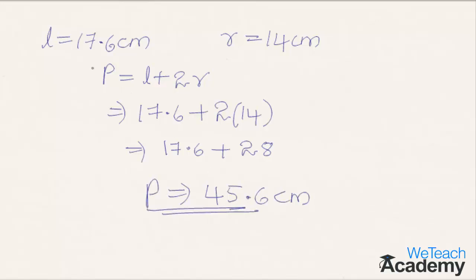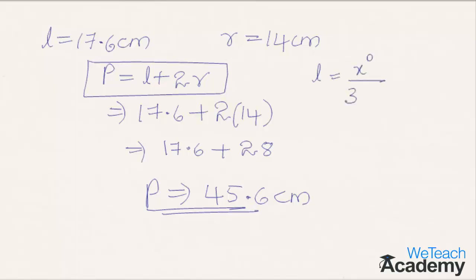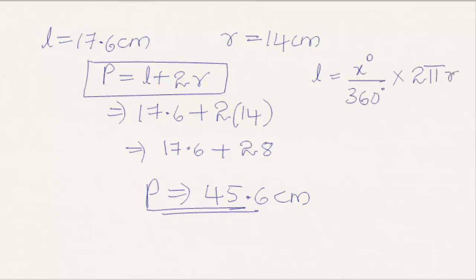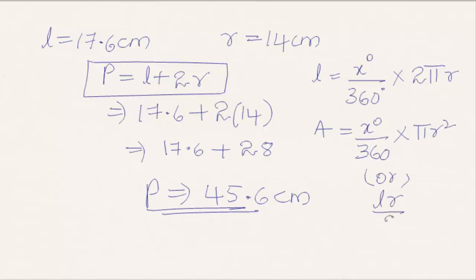To conclude: the perimeter of a sector is given by l plus 2r; the length of arc is given by x degrees divided by 360 degrees into 2 pi r; and the area of a sector is given by x degrees divided by 360 degrees into pi r squared, or else lr divided by 2. Hope you understood the concept. Do like and subscribe to Ateachacademy.com. Thanks for watching. Have a nice day.